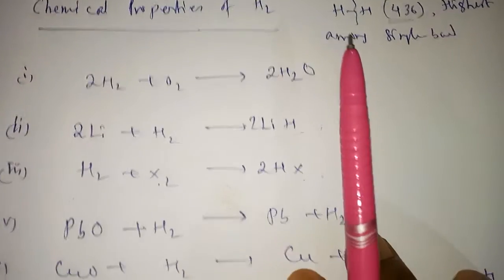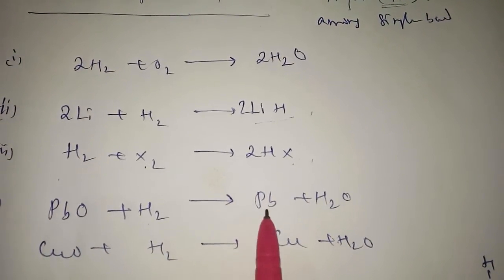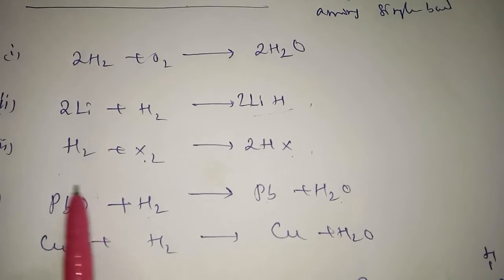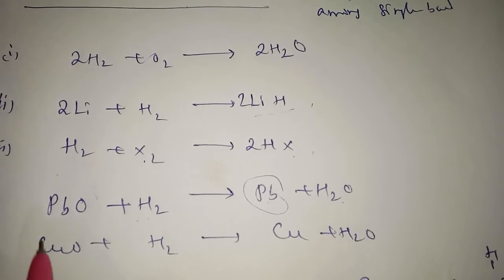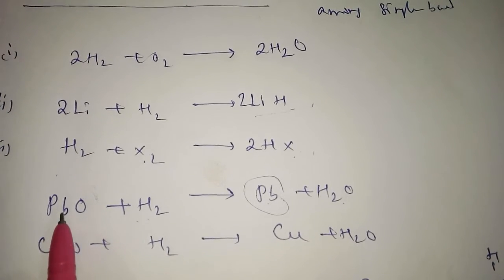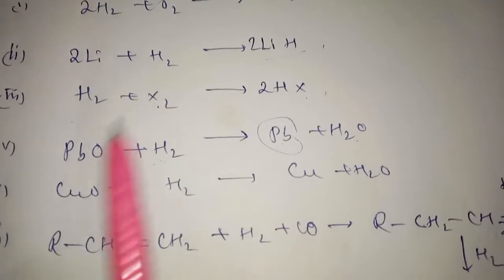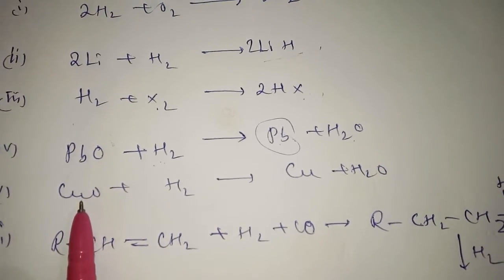Lead oxide is reduced to lead. The hydrogen reduces those metals which are placed below hydrogen in the reactivity series. Similarly copper oxide reacts with hydrogen to form copper and water.